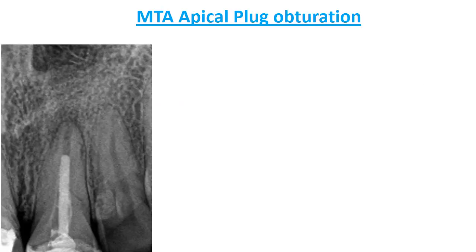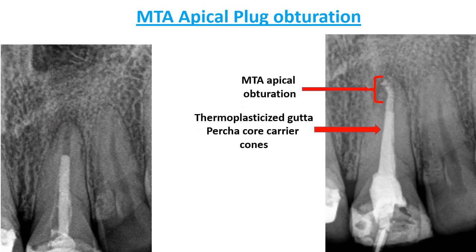Bioceramic can also be used as an apical plug when the apical foramen is very wide. In such cases, three millimeters of the apical region is plugged with MTA, and then gutta-percha fills the rest of the root canal.